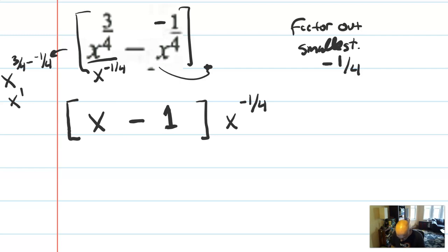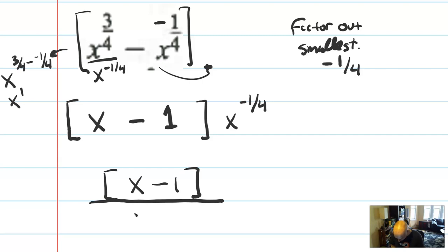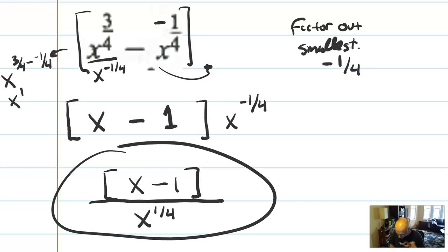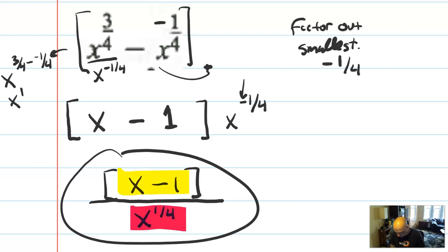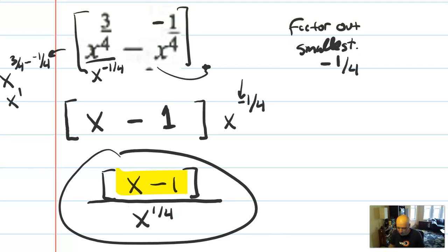In this case, you can do one more thing: negative one-fourth means put it on the bottom. So you could write x minus 1 over x to the one-fourth. That's probably the final form I would leave it in, just to avoid having any negative exponents in the final expression. Whenever you have a negative exponent, you can pull it out and use the negative to put it on the bottom of a fraction. We had two gross pieces, and now we have one simple piece and one piece with a fractional exponent — I think we've simplified this.